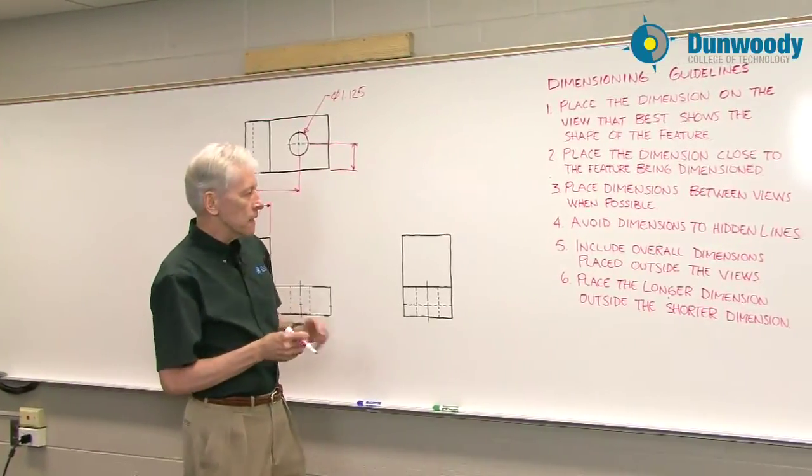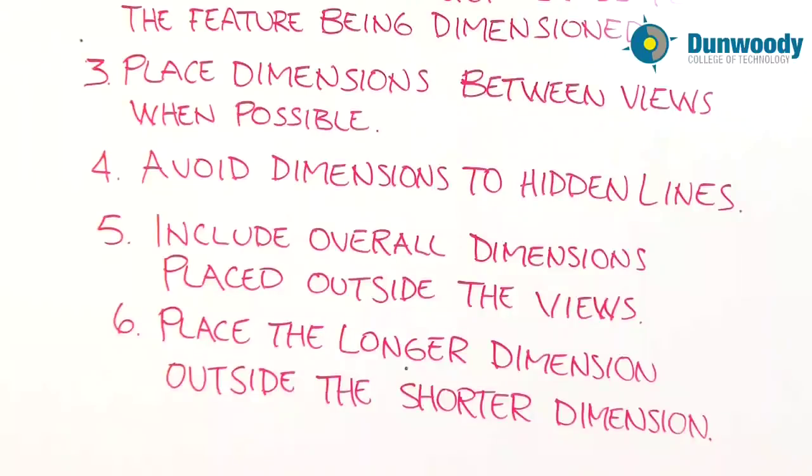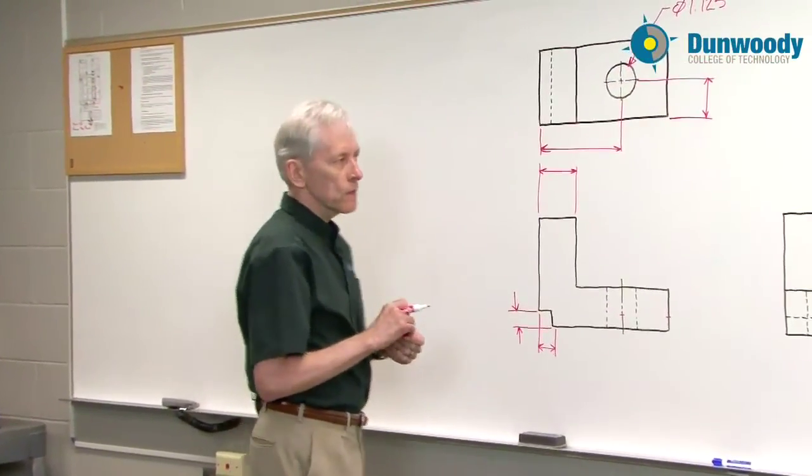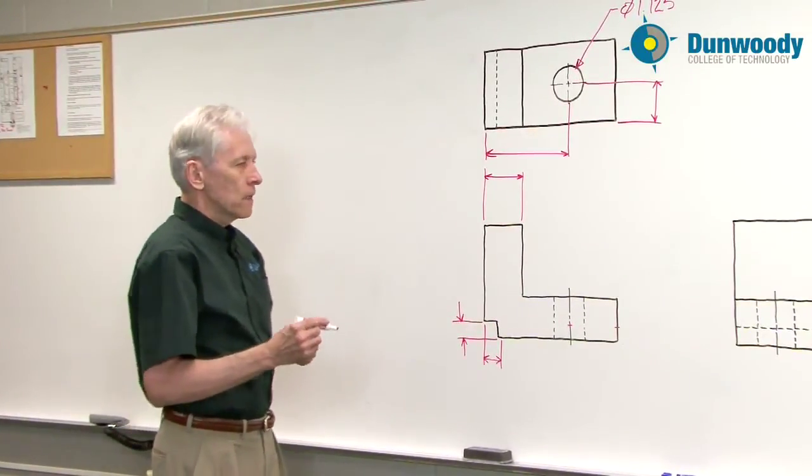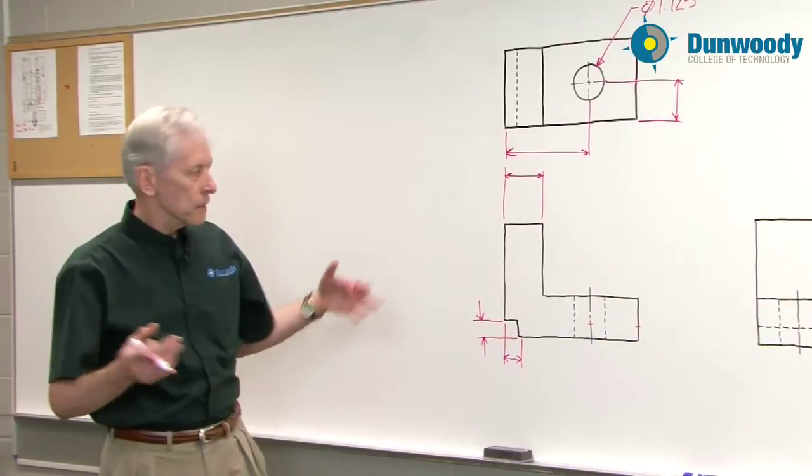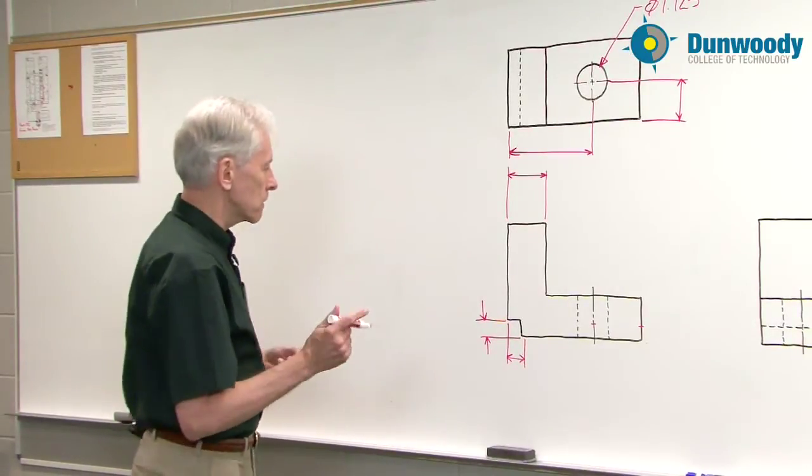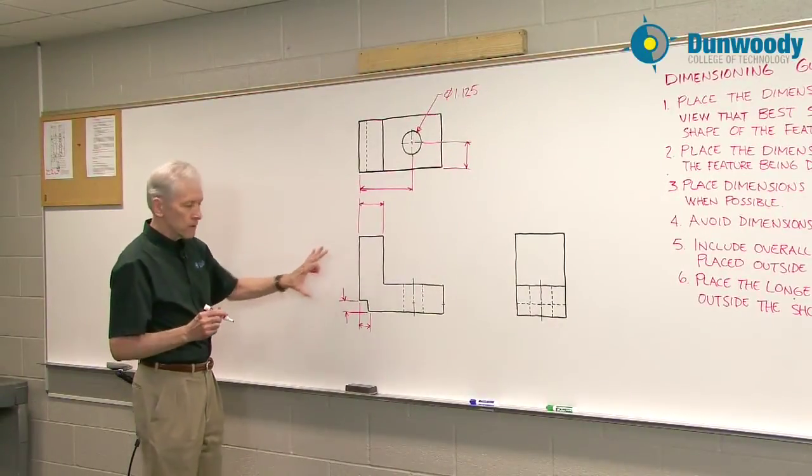Now the next guideline number five is to include overall dimensions placed outside the views. Here we have an exception to this guideline to put dimensions between views. So every part, especially a rectangular part like this, should have overall dimensions. And as much as possible, I like to include dimensions on the front view.